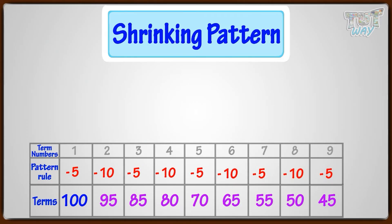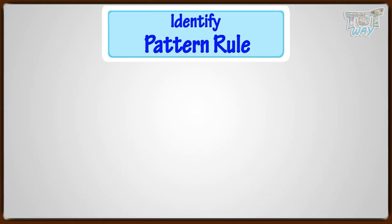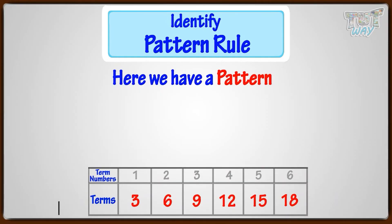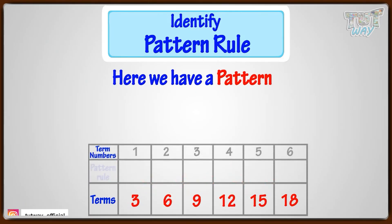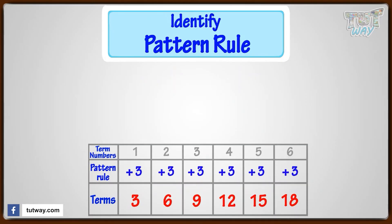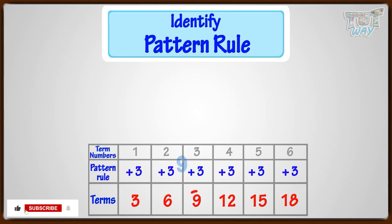Now you know what term numbers and terms are, and how to make patterns if you have the pattern rule. Let's identify pattern rules in some more patterns. Here we have a pattern. It starts at 3 and every next term is 3 more than the previous term. So the pattern rule is plus 3. The first term is 3, next term is 3 plus 3 equals 6, next term is 6 plus 3 equals 9, next term is 9 plus 3 equals 12.